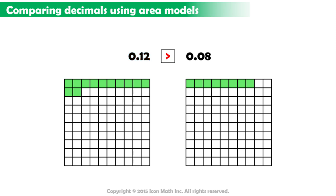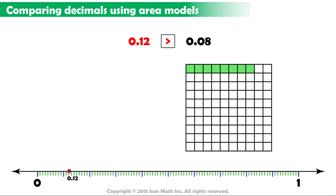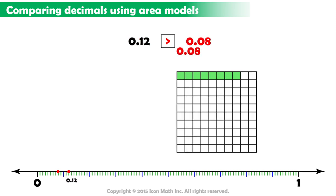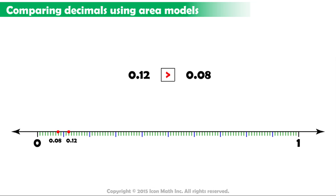Remember that the open side of the greater than symbol should be at the larger number. Also, we can represent these two decimal fractions on the number line. Here is twelve hundredths, and here is eight hundredths, as shown. As you know, the number located further to the right has the largest value. So, again, twelve hundredths is greater than eight hundredths.